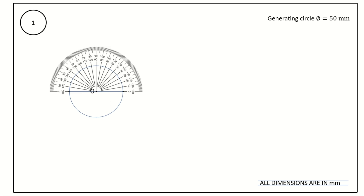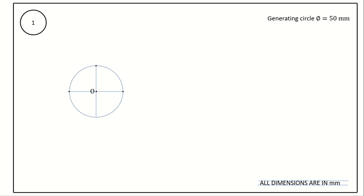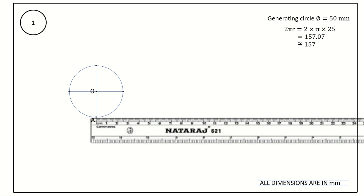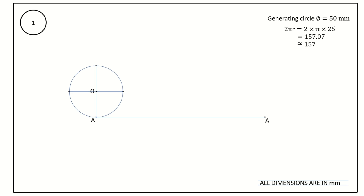Take a protractor with reference line passing through O. Mark a point on the circumference at 90 degrees. Using a scale, draw a vertical line — this line cuts the circumference on the other end. Mark that point as A, the generating point. The circumference of the circle equals 2πR = 2 × π × 25 = 157.07 millimeter, approximately 157 millimeter. Draw a line of length 157 millimeter and mark the point A. The length AA equals the circumference of the circle, 157 millimeter.